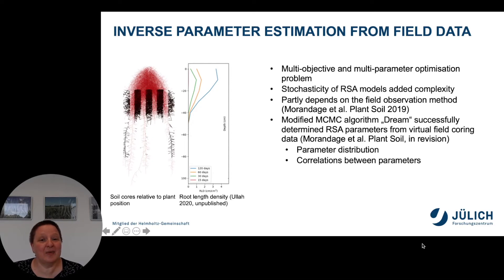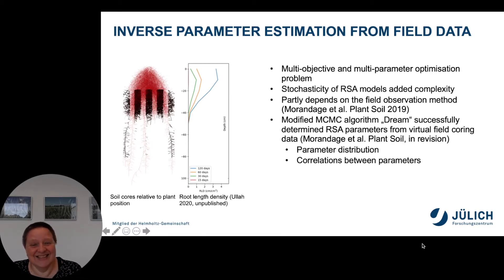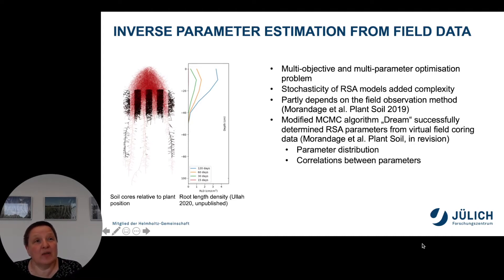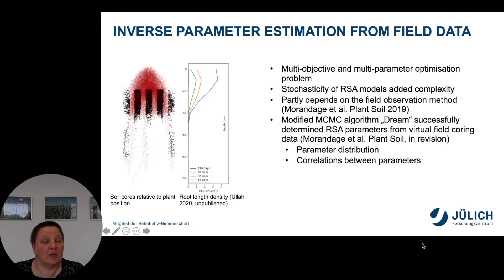The result of the inverse parameter estimation partly depends on the field observation method such as coring, trenching, or observation using rhizotubes. We use a modified MCMC algorithm called DREAM to inversely estimate root system architectures from field coring data. From that we not only obtain a single parameter value but a parameter distribution as well as information about the correlation between different parameters.